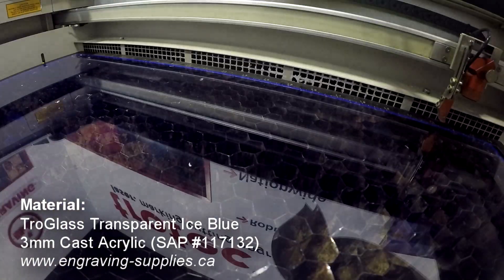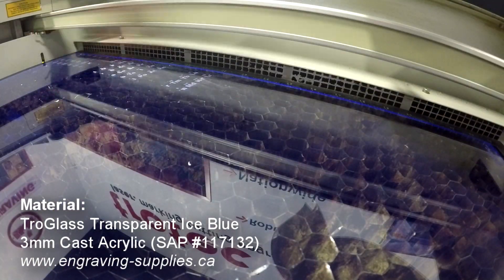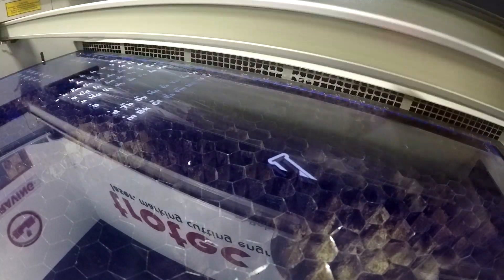We began by placing a quarter sheet of our ice blue transparent tro glass into our Trotec speedy 100 laser machine. We then engraved the symbols for each element onto the base of our table.